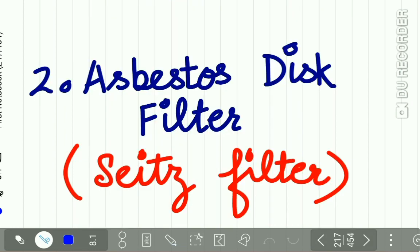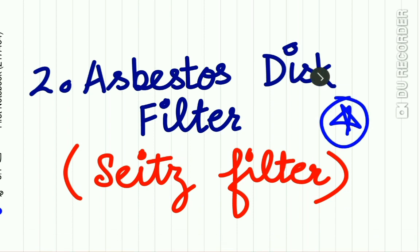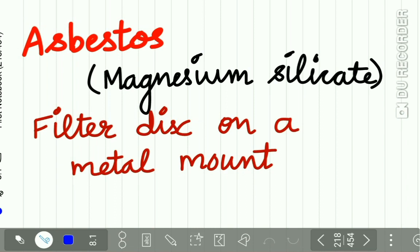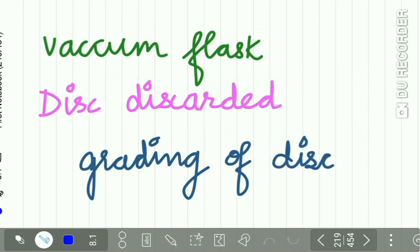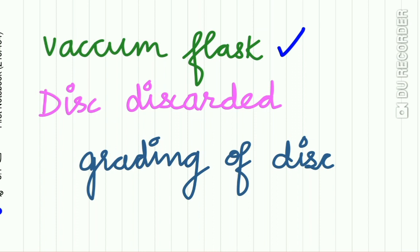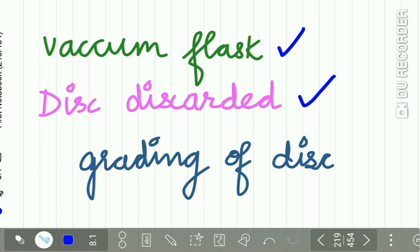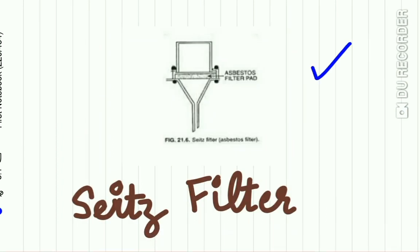The second filter type is the asbestos filter, also called the Seitz filter. These are made up of asbestos or magnesium silicate. The filter disc made of asbestos is supported on a metal mount and attached to a vacuum flask through a silicone rubber bung. After use, the filter disc is discarded and a fresh disc is used each time. The metal component is sterilized by autoclaving.